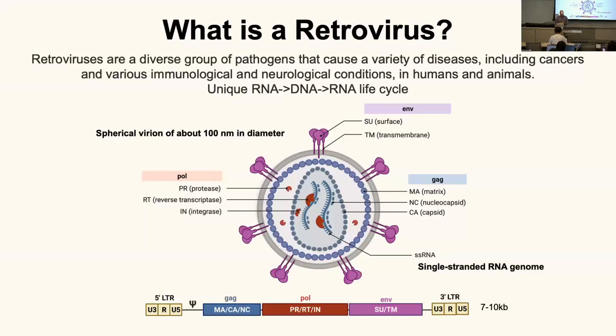The final main gene encodes the envelope, which are these proteins that the virus needs to match with host cells and to get into host cells.